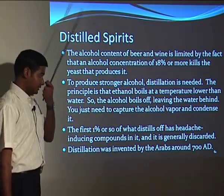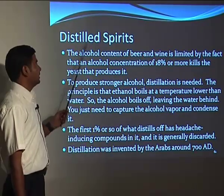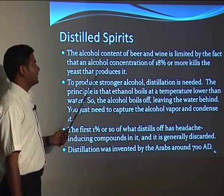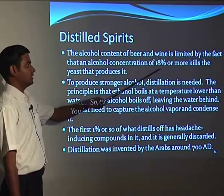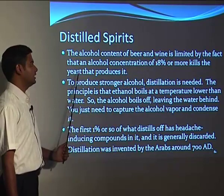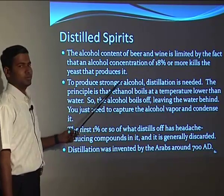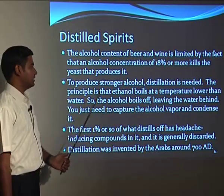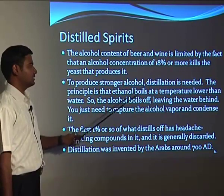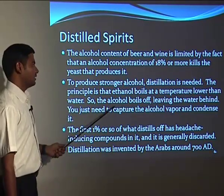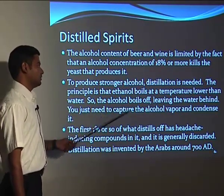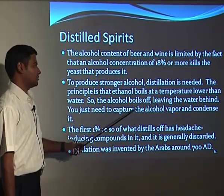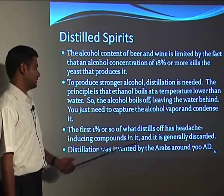The next product is distilled spirits. The alcohol content of beer and wine is limited by the fact that an alcohol concentration of 18 percent or more kills the yeast that produced it. To produce stronger alcohol, distillation is needed. The principle is that ethanol boils at a temperature lower than water, so the alcohol boils off leaving water behind; you capture the alcohol vapors and condense them.